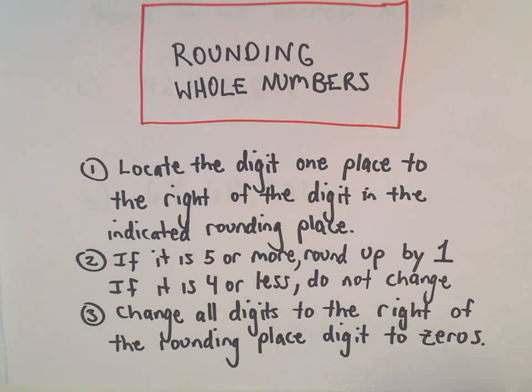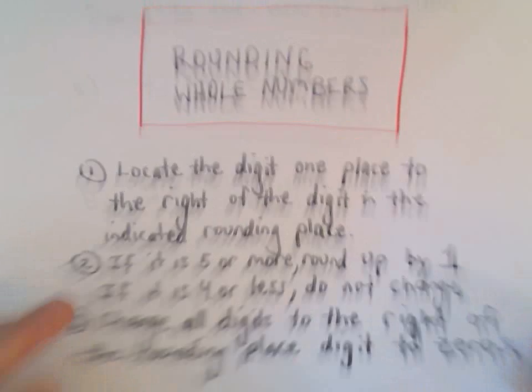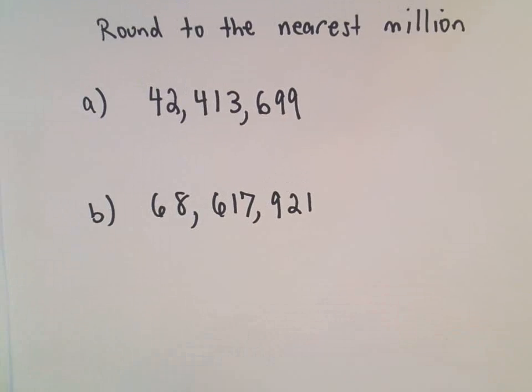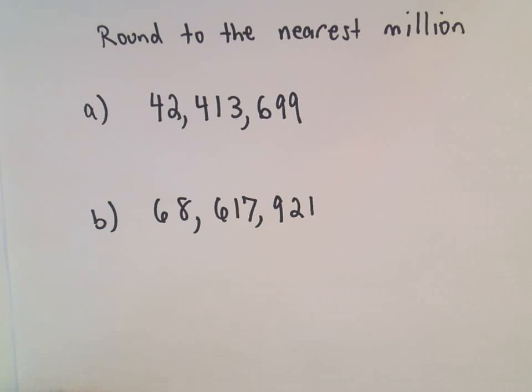All right, so just a couple more examples here of rounding whole numbers. Here we're going to round the following numbers to the nearest million.